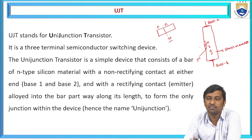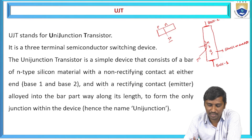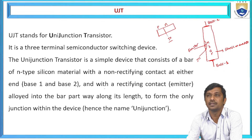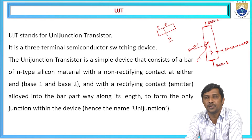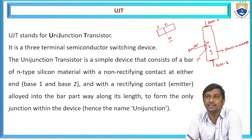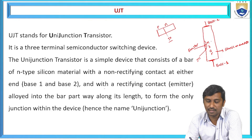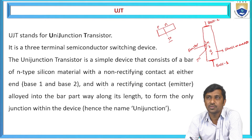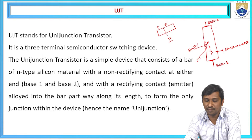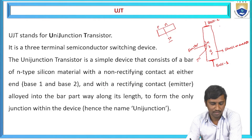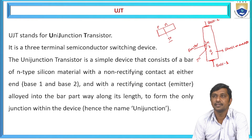Where we diffuse the P-type material into the N-type semiconductor bar, that terminal is connected with one electrode called the emitter. Based on this construction of the unijunction transistor, we have three terminals: emitter, base 1, and base 2. This is the construction of the unijunction transistor.